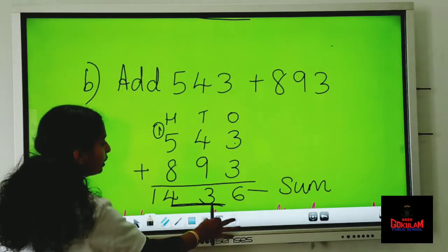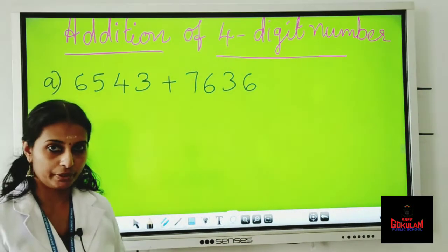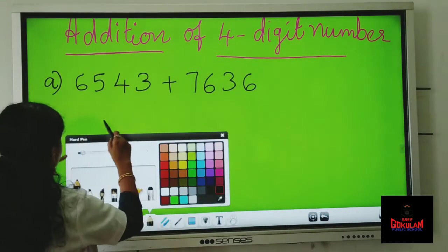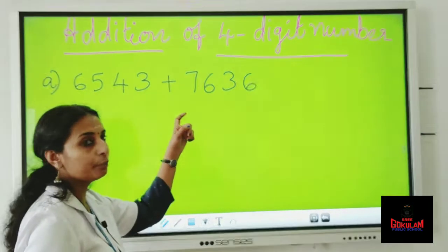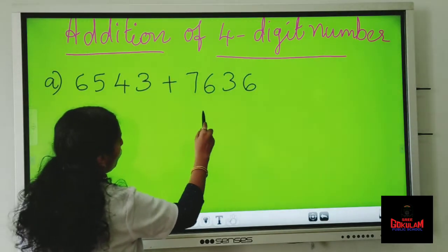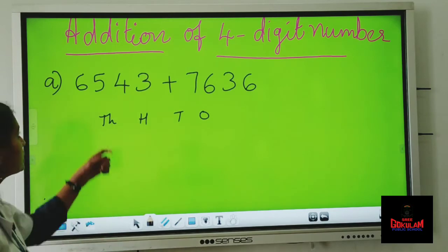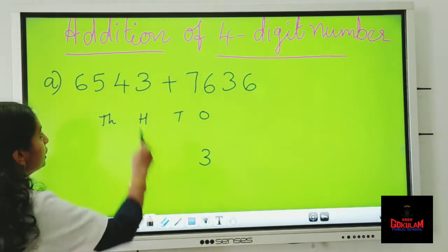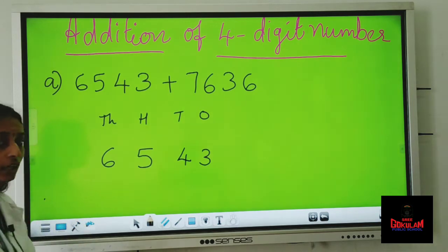Next we are going to learn about addition of four digit numbers — how to add four digit numbers. Here we have 6,543 as the first number and the second number is 7,636. Let's write the place value. We have four digits: ones place, tens place, hundreds place and thousands place. The first number is 6,543, so in ones place there is three, in the tens place four, five, and six is in the thousands place.